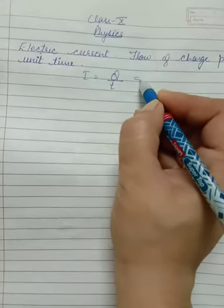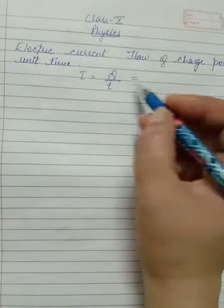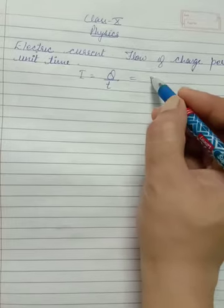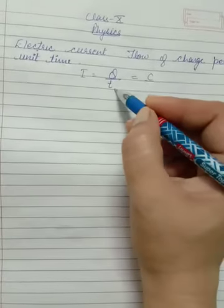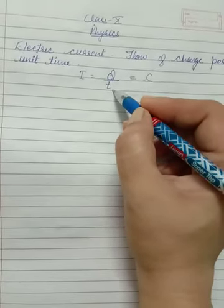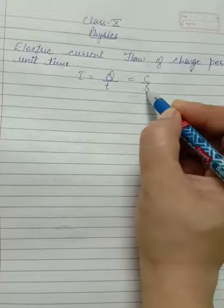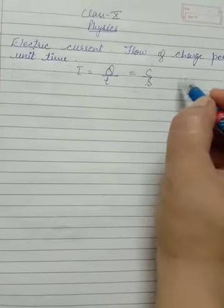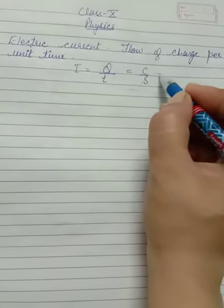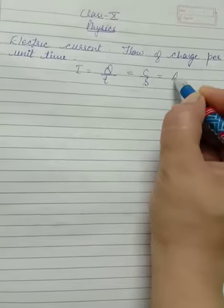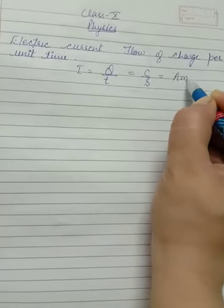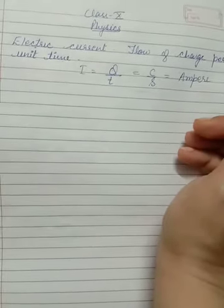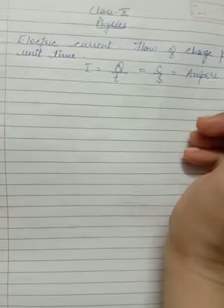The unit for charge is Coulomb and the unit for time is second, so it becomes Coulomb per second. In SI units we call it Ampere. So Ampere is the SI unit of electric current.